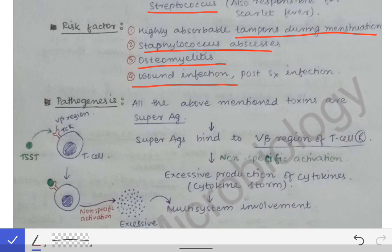If there is a Staphylococcus abscess, osteomyelitis, wound infection, or post-surgical infection with Staph aureus left untreated for a very long time, there are chances of developing toxic shock syndrome. These are the risk factors of toxic shock syndrome.